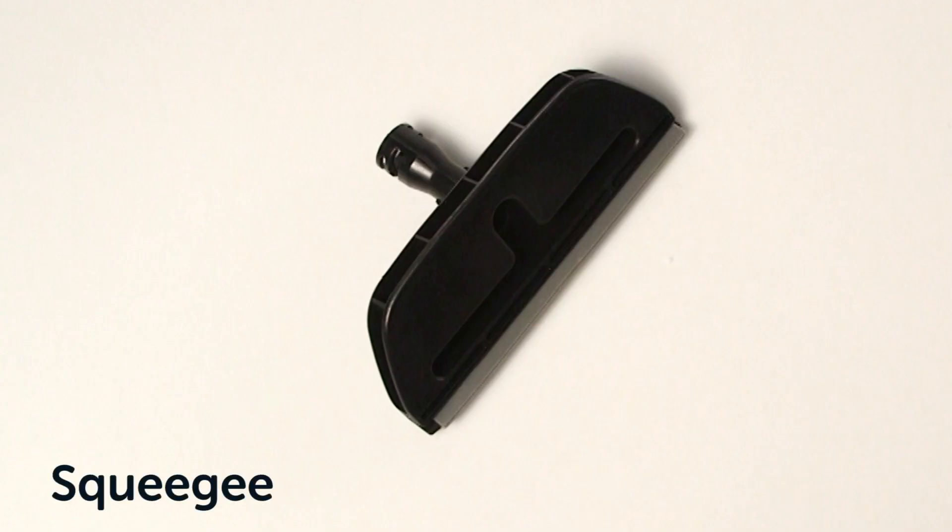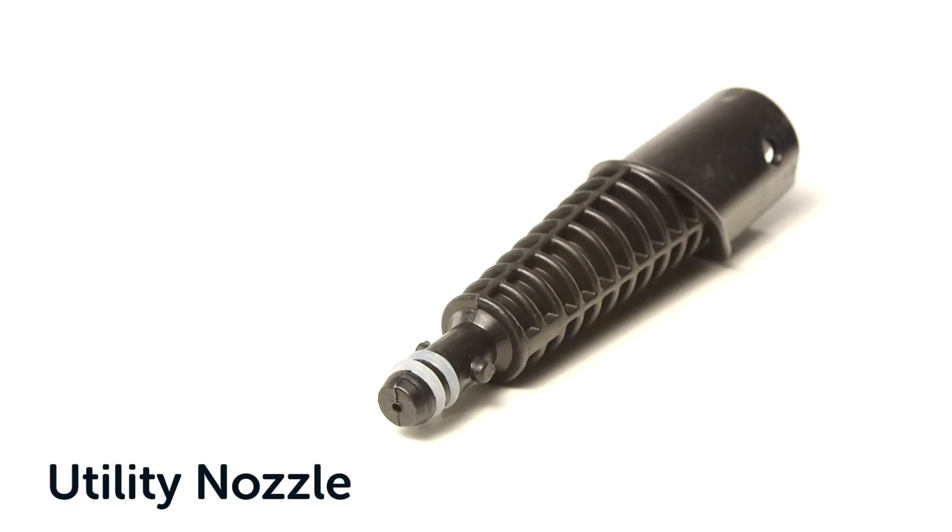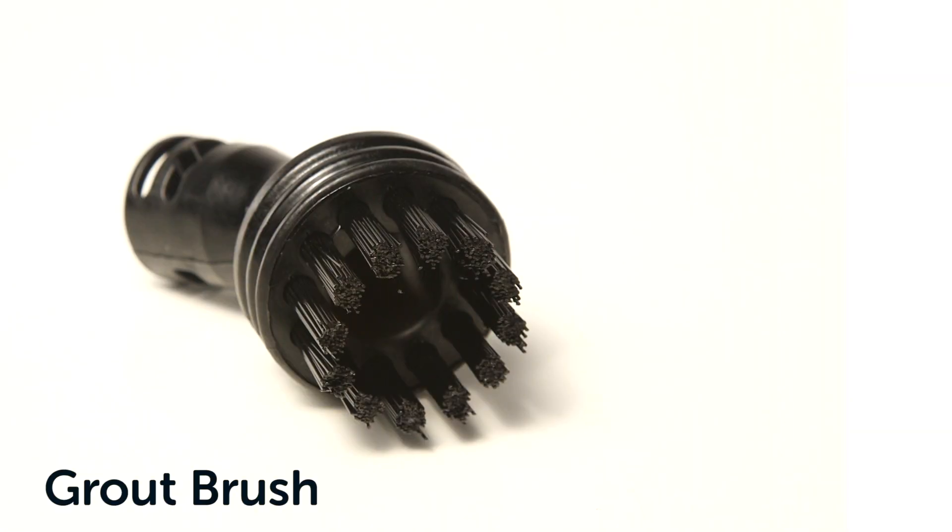The Bush Steam Cleaner comes with a range of accessories that include a squeegee that can be used as an upholstery tool with a supplied microfiber cloth. Additionally supplied is a utility nozzle, small brush, and a grout brush.